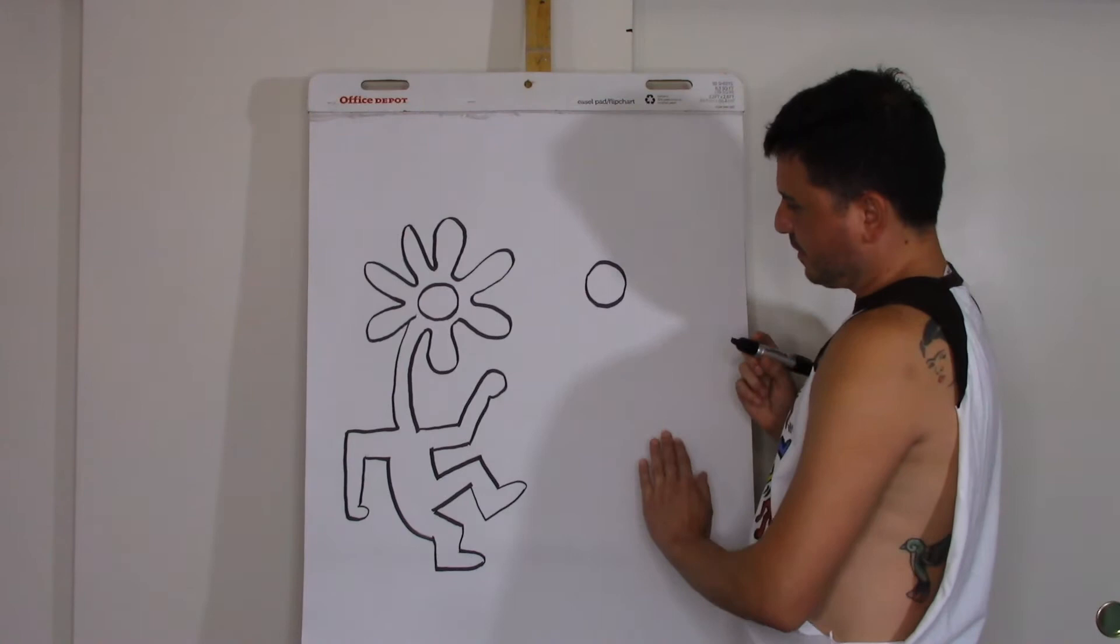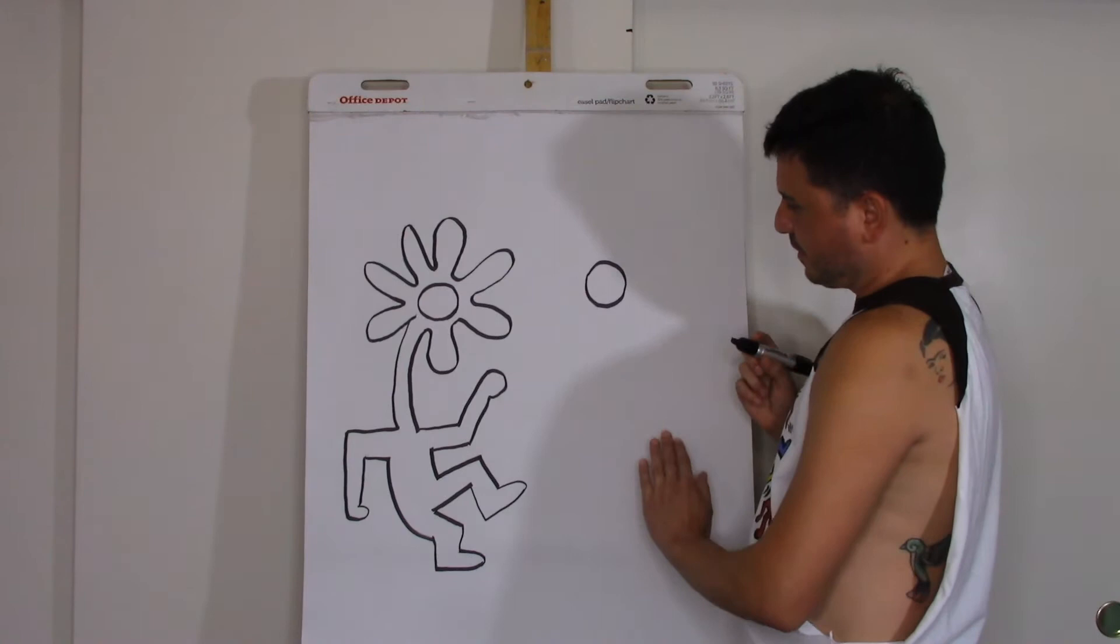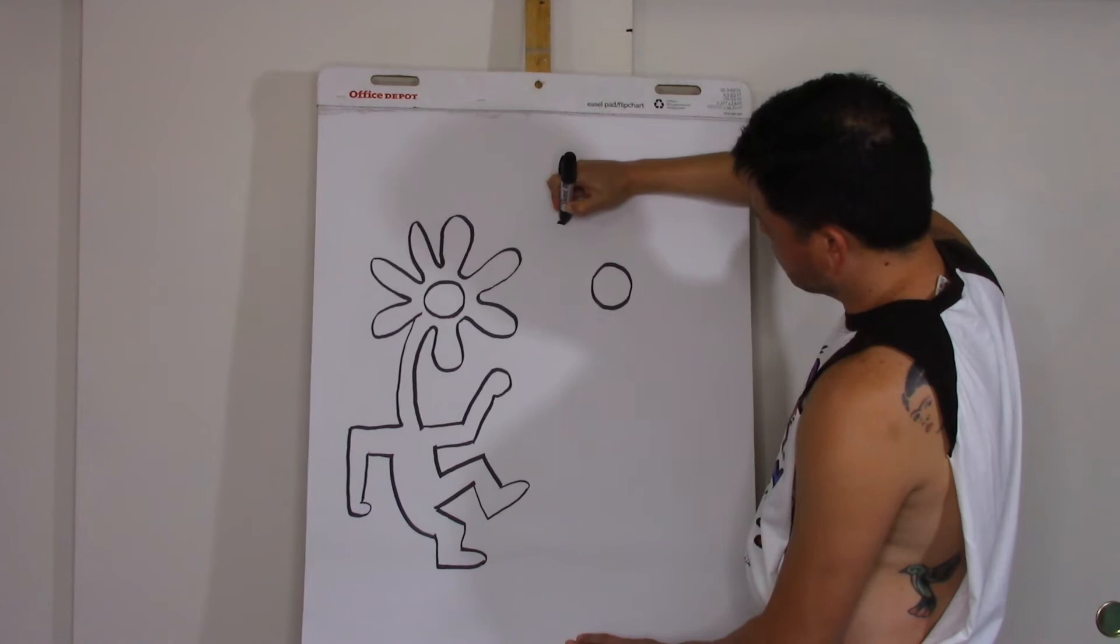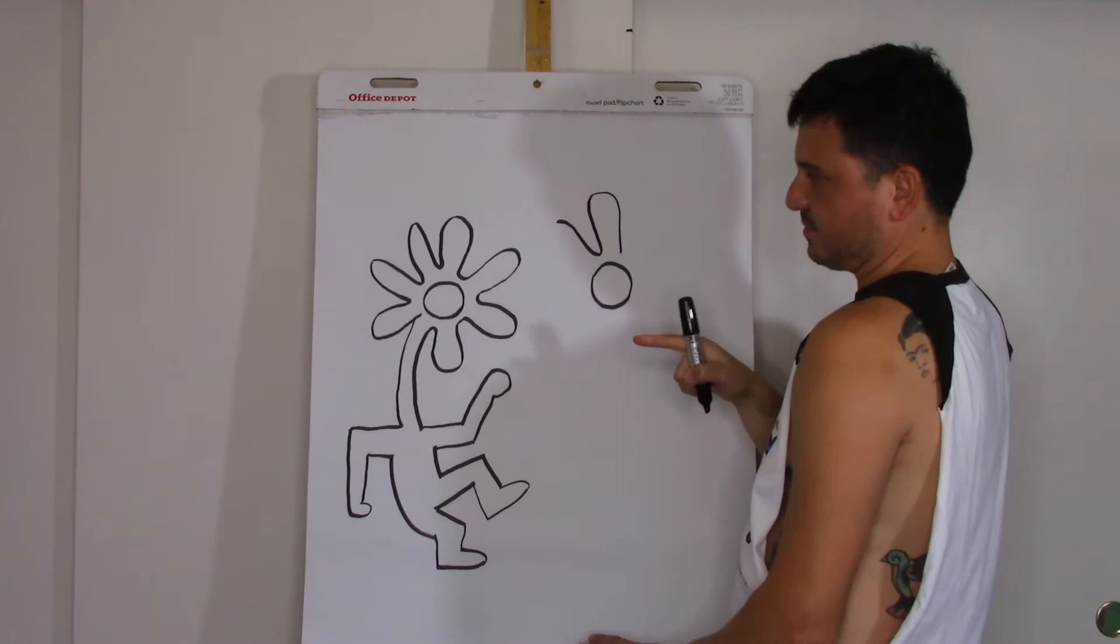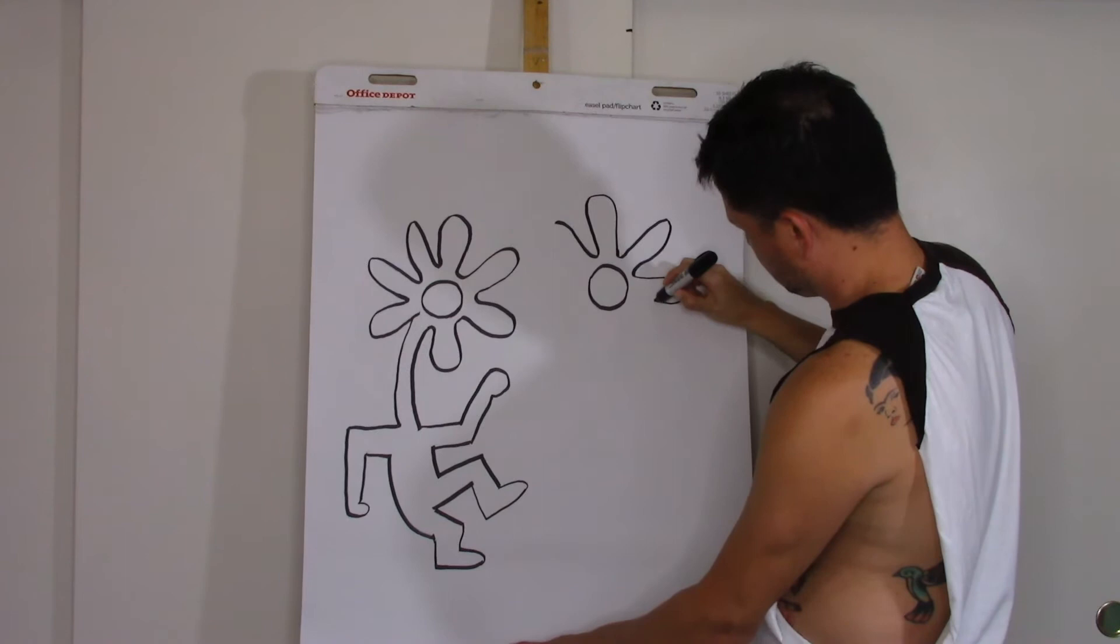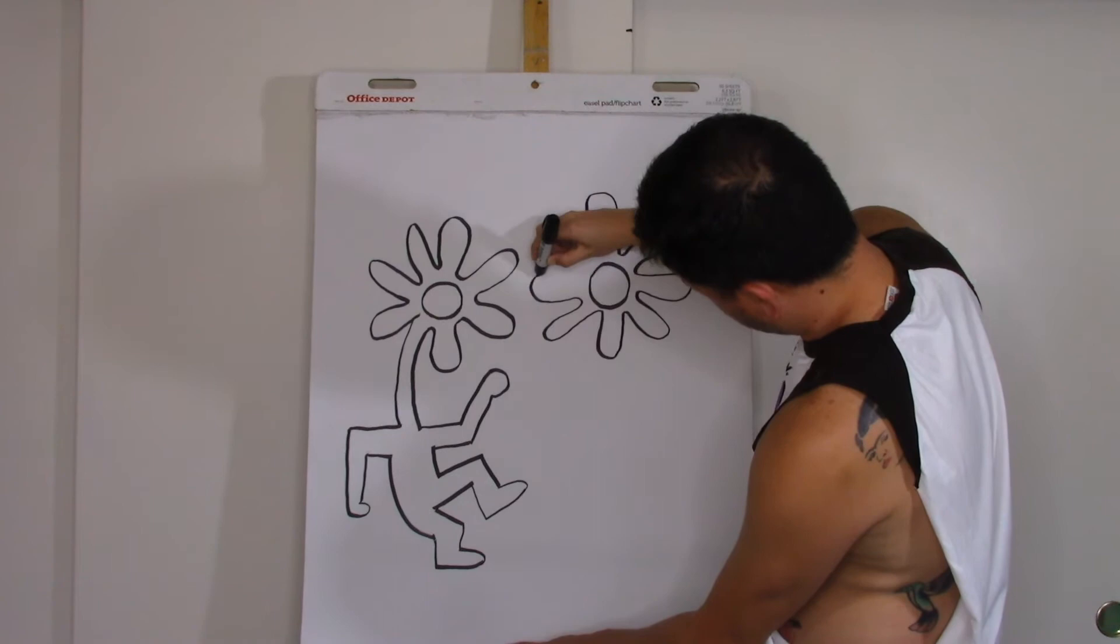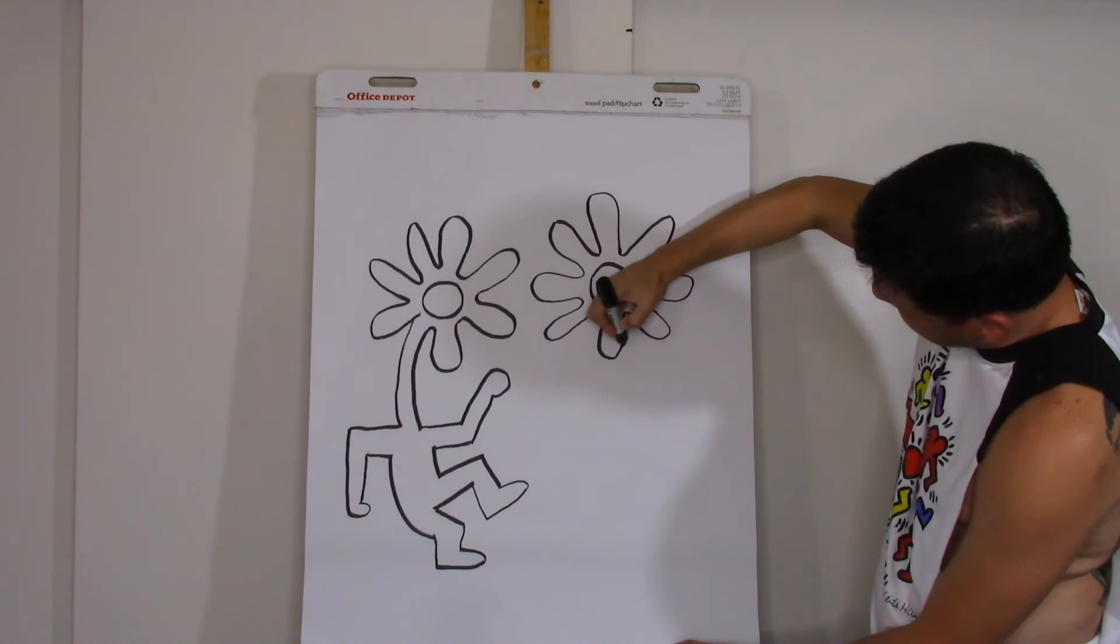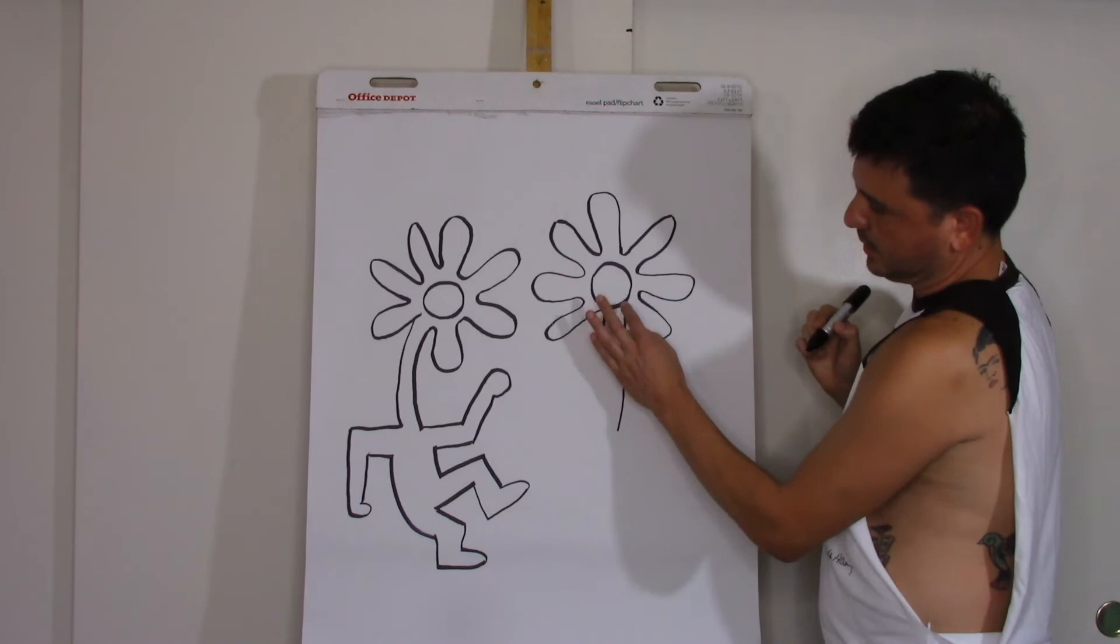So now the same thing over here. We're going to do the daisy first before we do the stem. So same thing, you're just going to go down and up, curve and down, and then just repeat it all the way around. So after you do that, we're going to do the stem. So you bring the line down from right here, the daisy closest to the center, and then one on the other side.